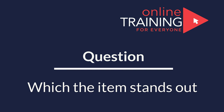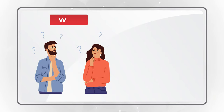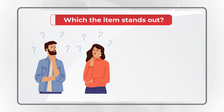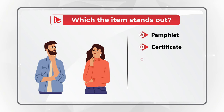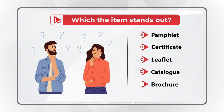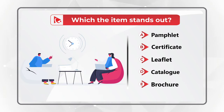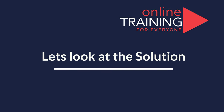Here's an interesting question testing your knowledge of words and verbal reasoning. You're presented with five words — pamphlet, certificate, leaflet, catalog, and brochure — and you need to determine which item stands out. Give yourself a few seconds to find the answer, and pause the video if needed.